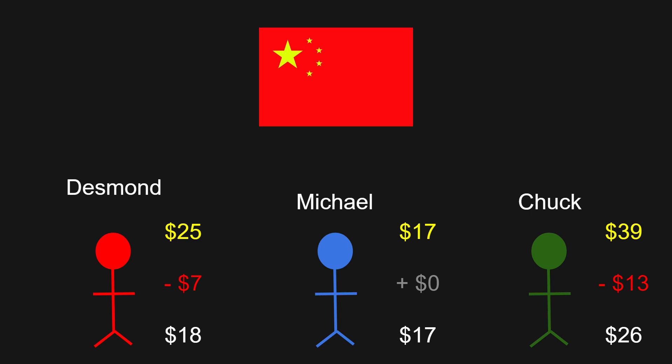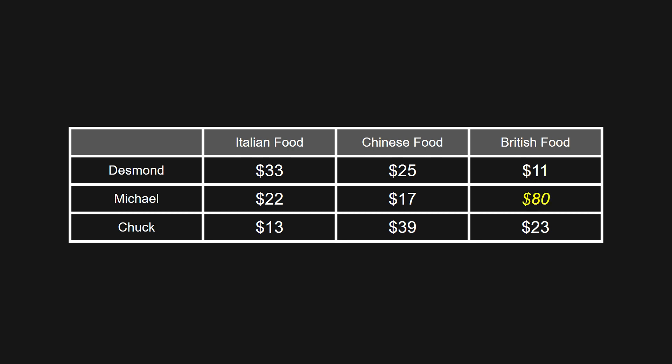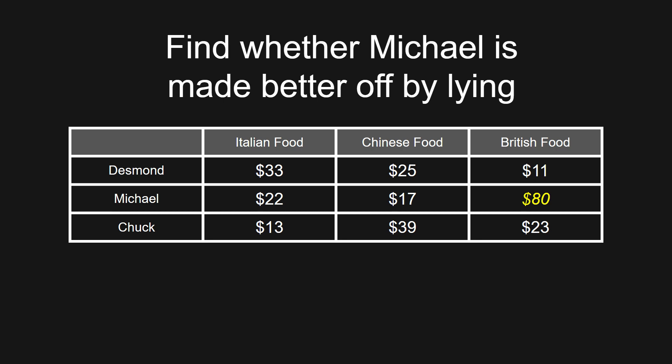Now let's imagine an alternative scenario where Michael lies about his willingness to pay. Specifically, he really wants to end up getting British food tonight, so he decides to write down that he'd be willing to pay $80 instead of $40 to get British food. In this new scenario where Michael lies, we can try solving for his payment and net payoff to see if he ends up better off by lying compared to when he wrote down his true value.